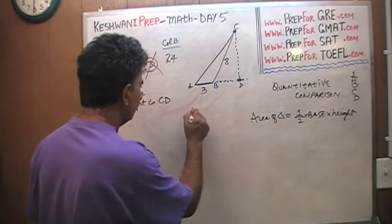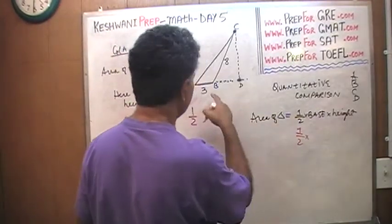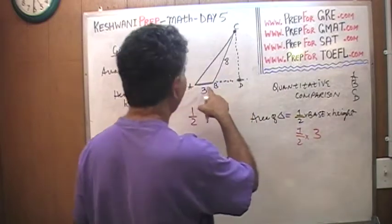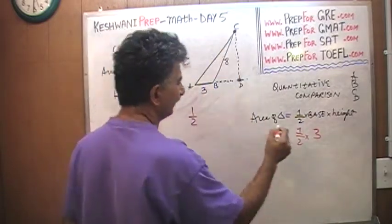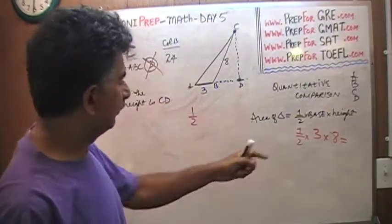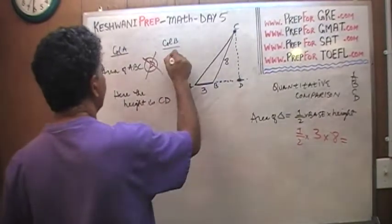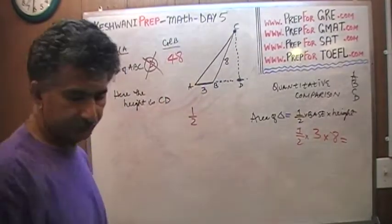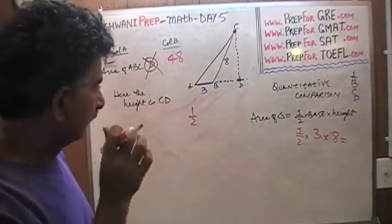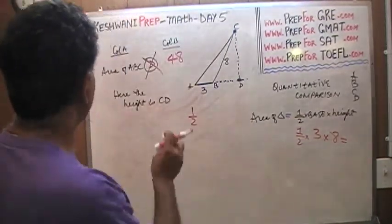In haste, they simply go one-half base, which is 3, times height, and they think that this is the height 8. Oh, 24. That should not have been 24. That should have been 48. No, that should not have been 48 either. 24. That should have been 12.